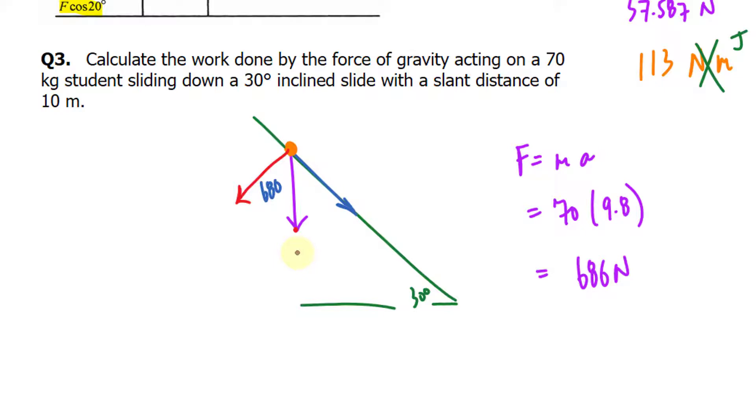The next part involves a little bit of geometry. If this is 30 degrees and we were to momentarily extend this vector all the way down, we would have a 90 degree angle. If that's 90 and that's 30, then this has to be 60 degrees.